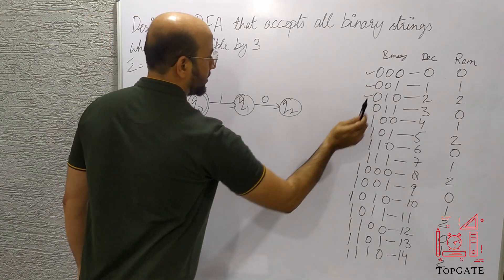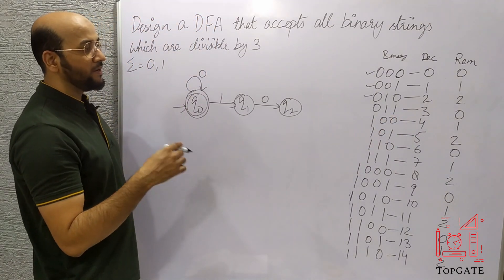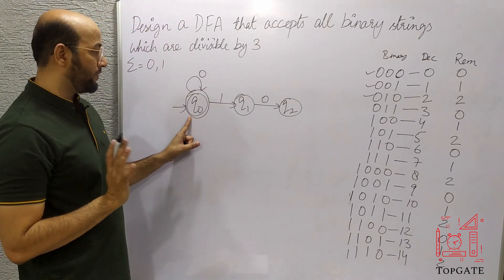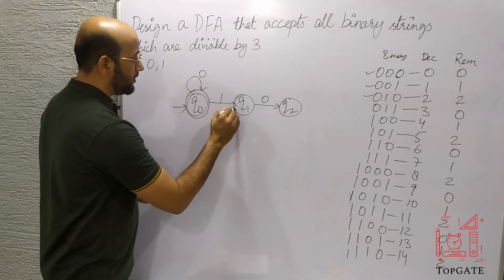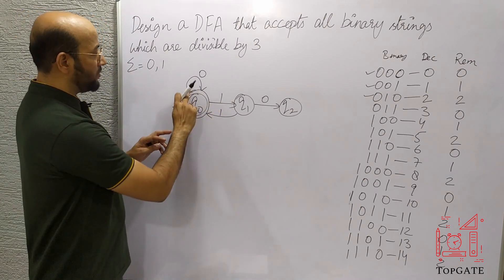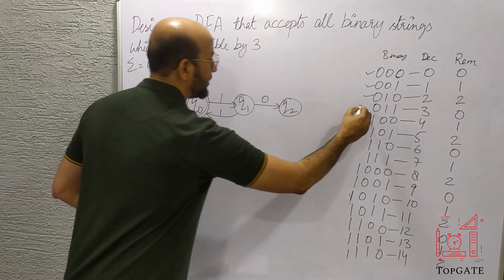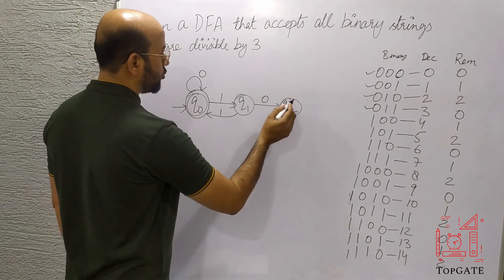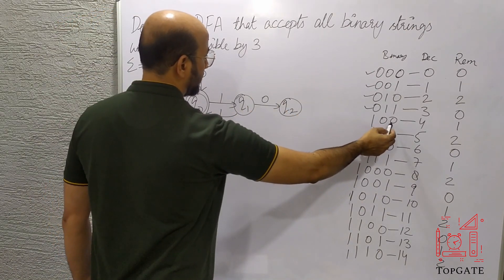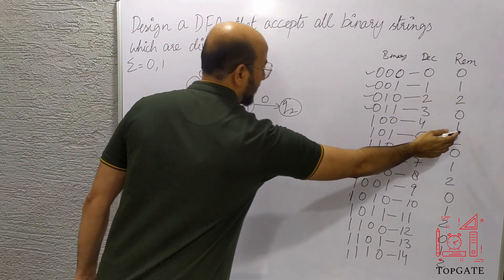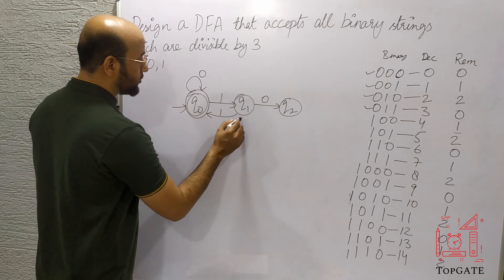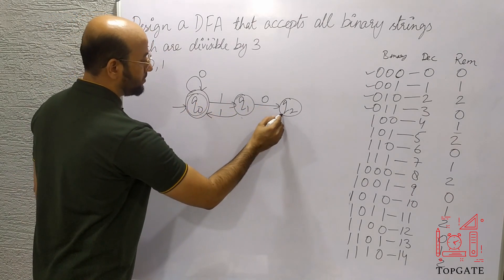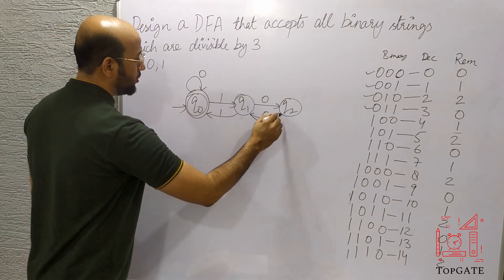Next, 011 is 3 in decimal, and when 3 is divided by 3 the remainder is 0, so reading 011 we should always come to state q0, the final state. Now q1 is complete with two transitions: one for 0 and one for 1. For q2 we also need two paths. 100 in binary is 4 in decimal, and 4 divided by 3 gives remainder 1, so from q2 reading 0 we come to state q1.